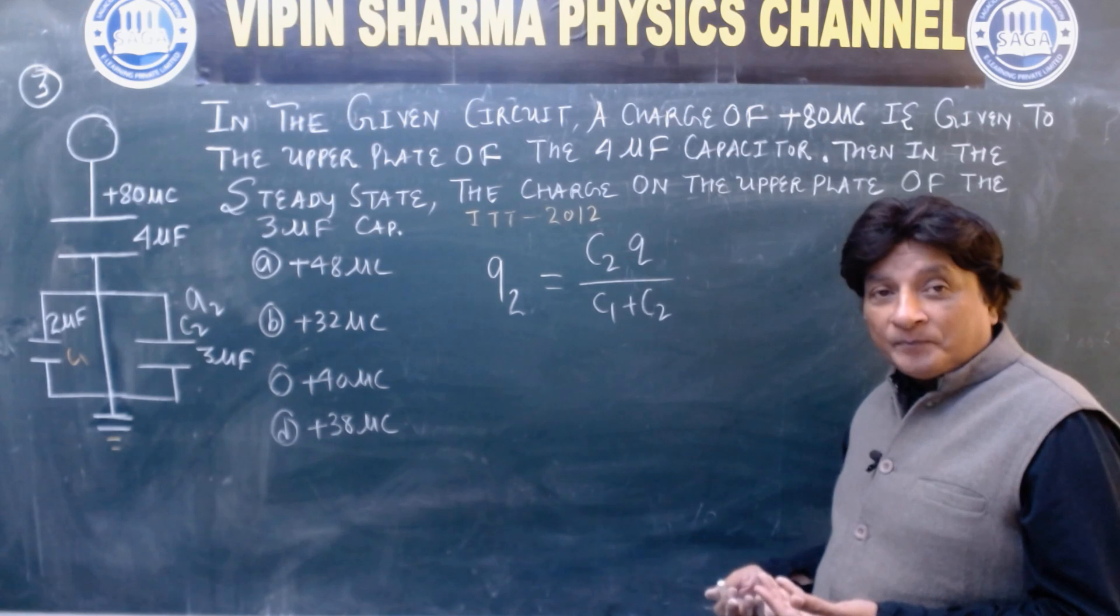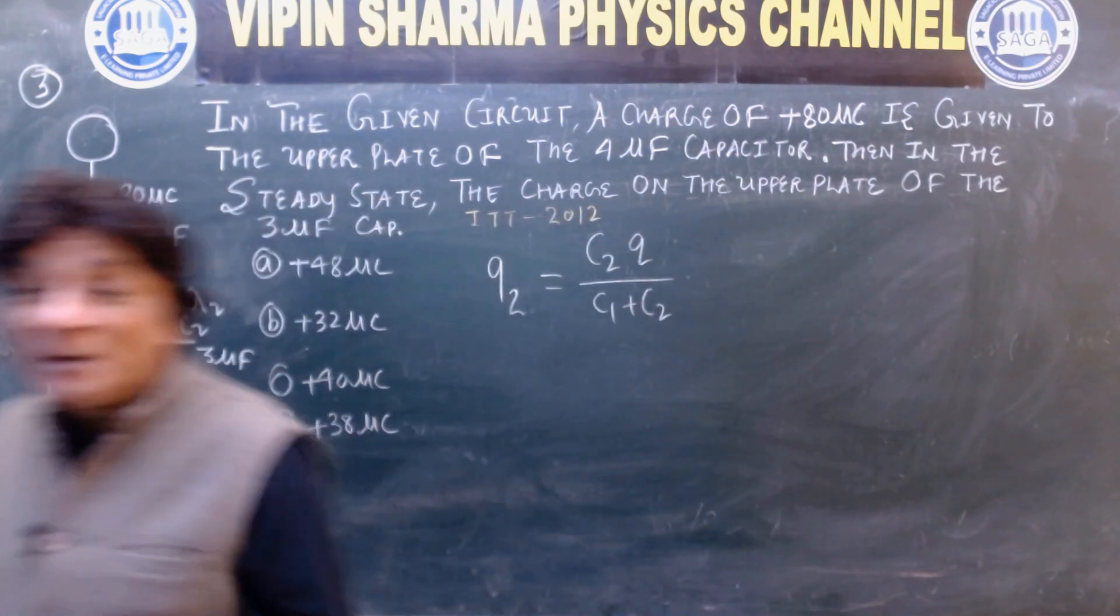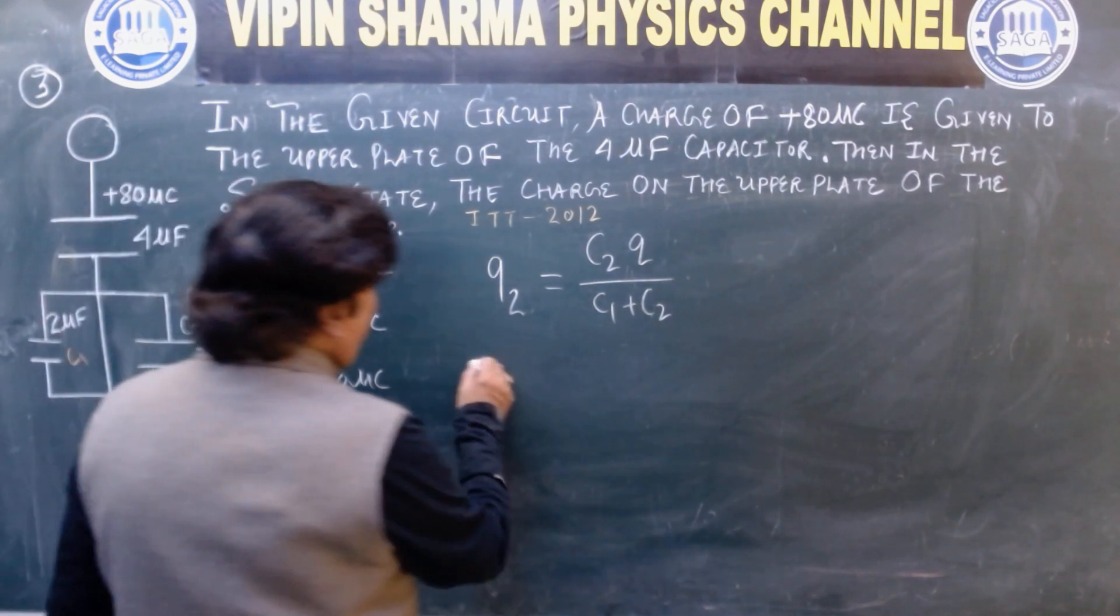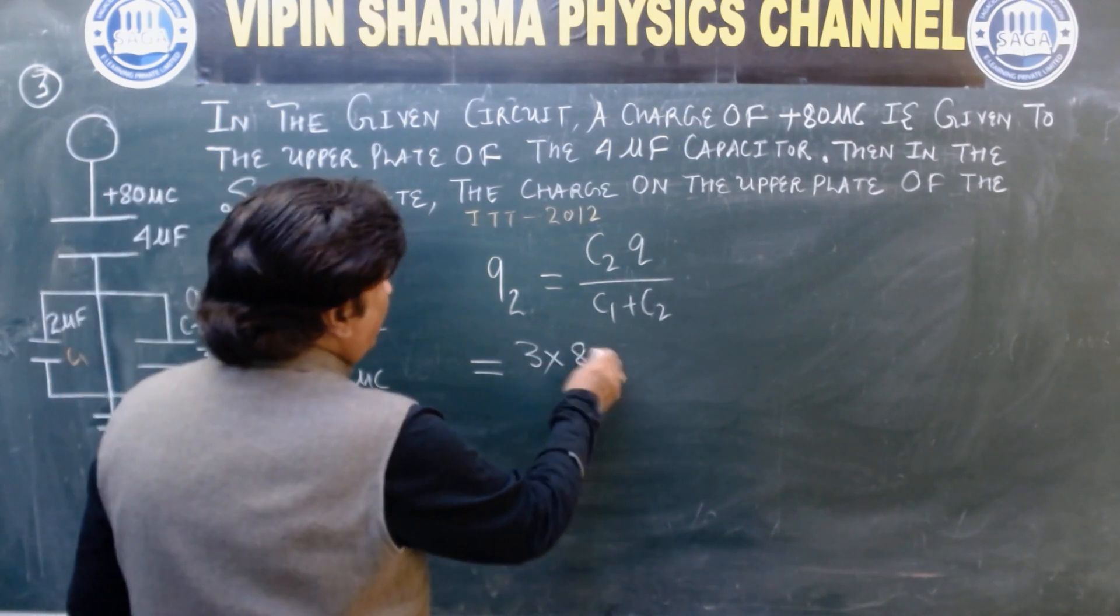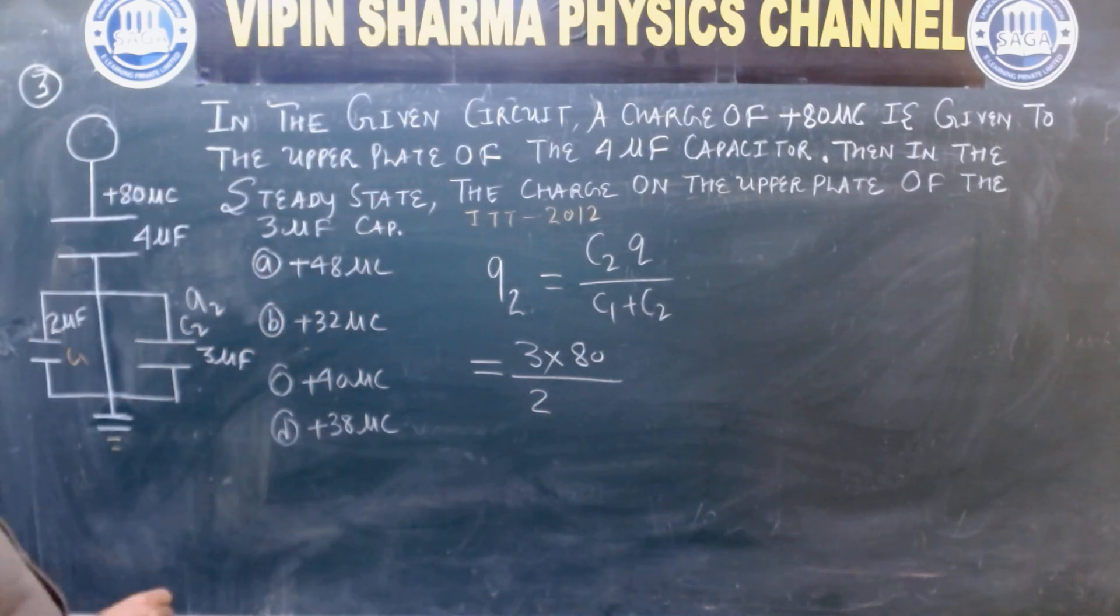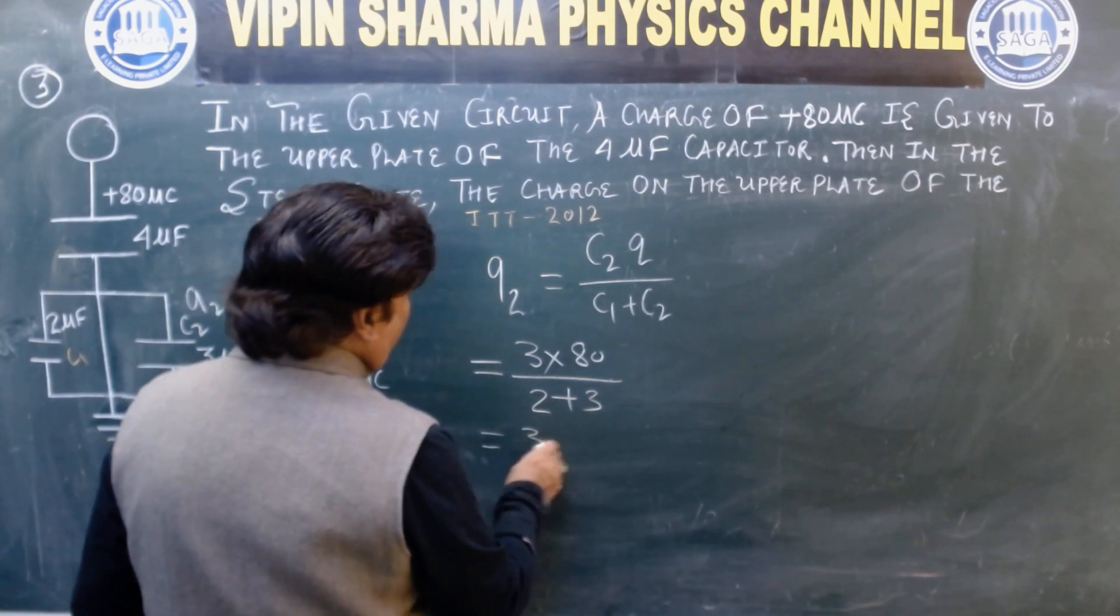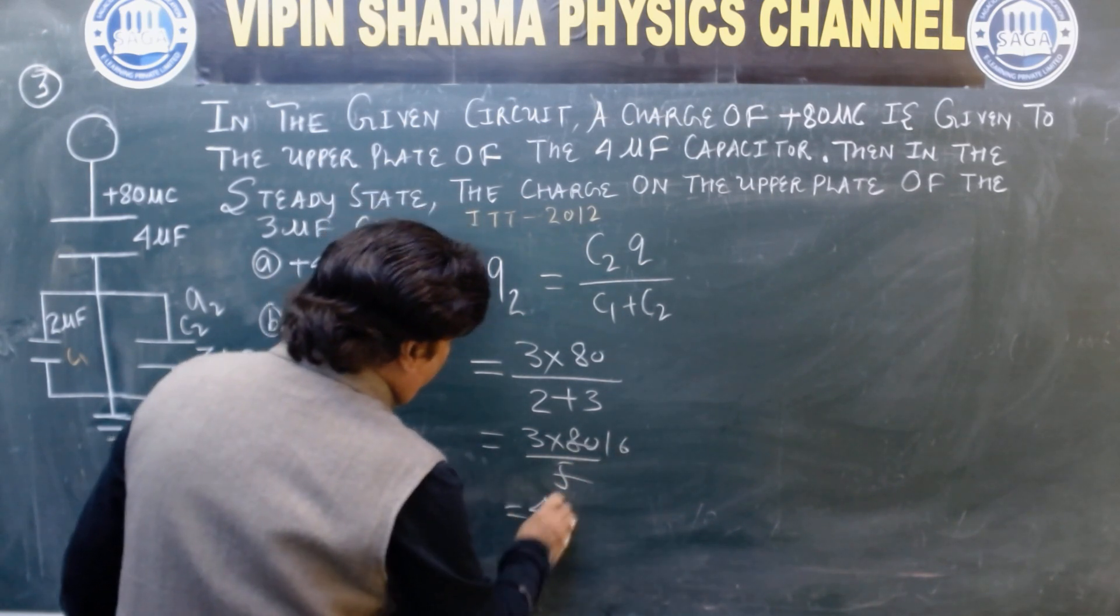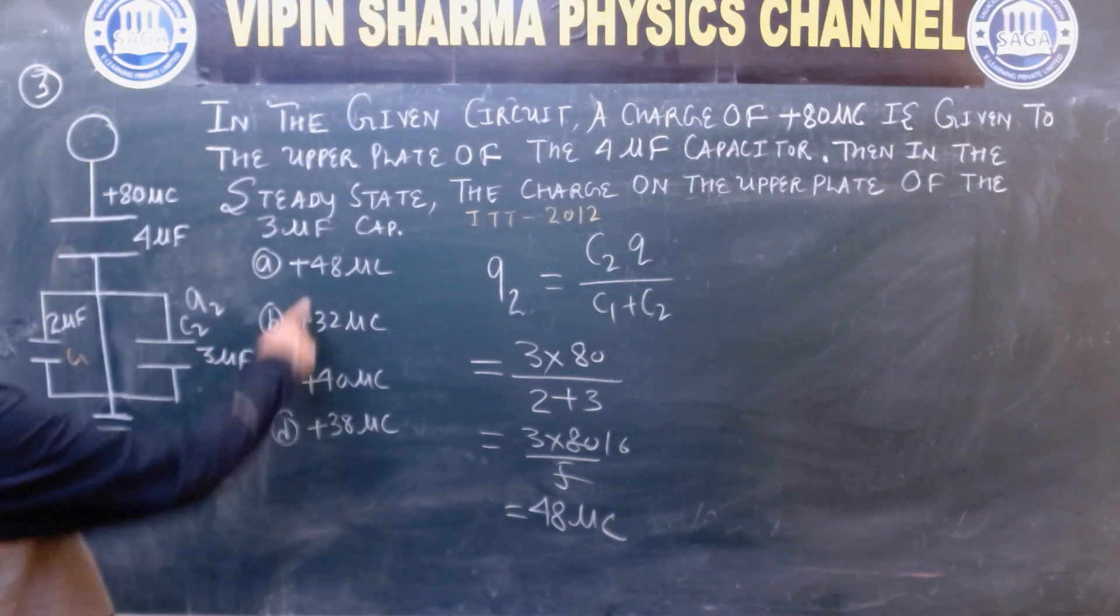Now people will say sir how is this? This will be established. In multiple choice questions, with practice we learn some things. So C2 is 3, Q is total charge 80, C1 is 2, C2 is 3. So this is 3 into 80 upon 5, which is 16. So answer is 48 microcoulomb. So answer is A.